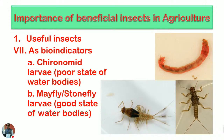As bio-indicators, insects indicate the state of particular places or atmospheres. For example, the Chironomid larvae shown at the top right corner indicate water quality: if Chironomid larvae are present in greater numbers in a water body, it means the water is in poor state with very low biological oxygen. Conversely, if the water body is in good state with good oxygen levels, you may see mayfly or stonefly larvae in that water body.